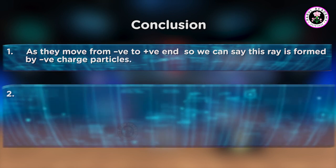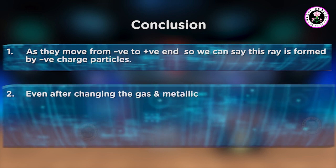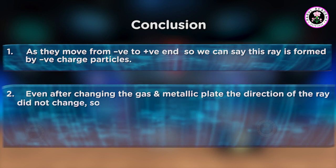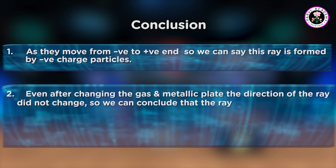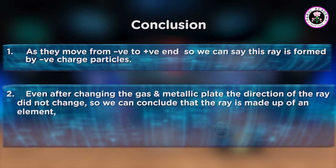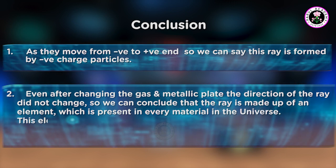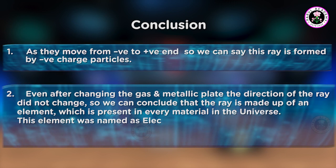Number 2: Even after changing the gas and metallic plate, the direction of the ray did not change. So, we can conclude that the ray is made up of an element which is present in every material in the universe. This element was named as electron.